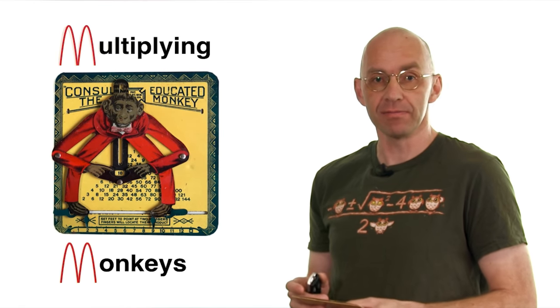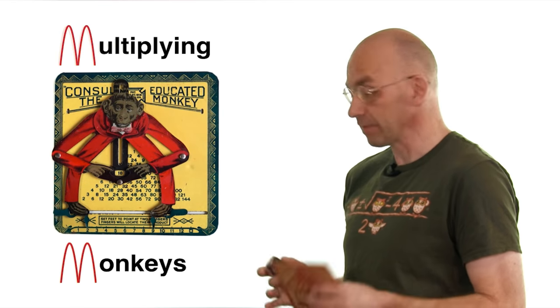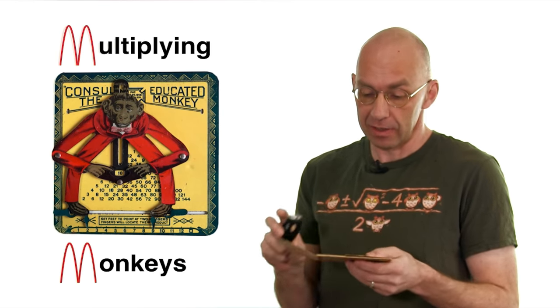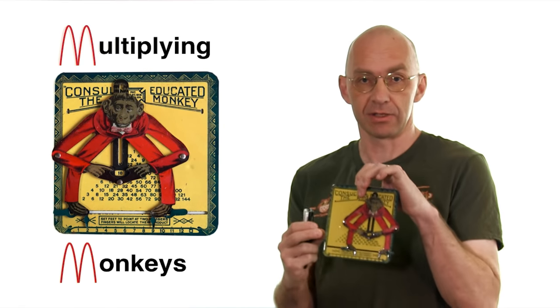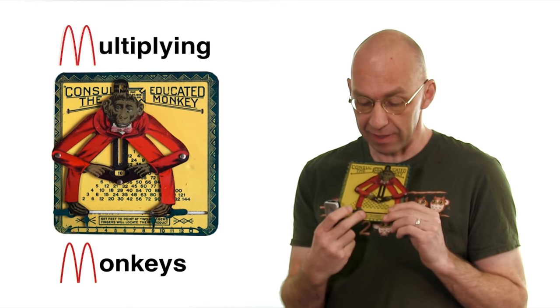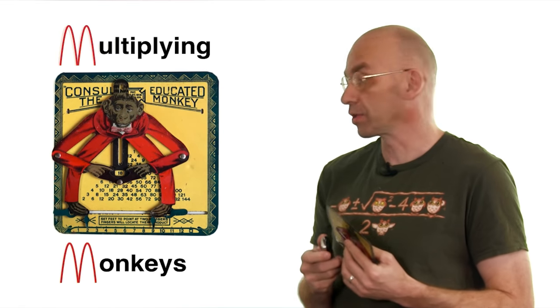It's a very old toy patented in 1916, and I actually got one of those original toys here. So it comes in this box and out comes the educated monkey. What the monkey does is it multiplies, and it does this by moving around the feet. I've got a movie here to show this to you.